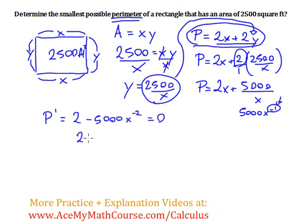So let me just rewrite this. This is 2 minus 5,000 over x squared. Because x to the power of negative 2 is just 1 over x squared. So I can just rewrite this as 5,000 over x squared. That's equal to 0.